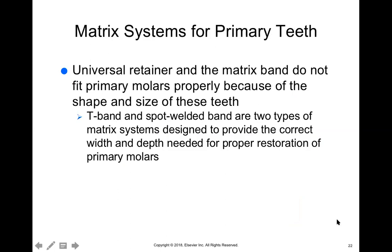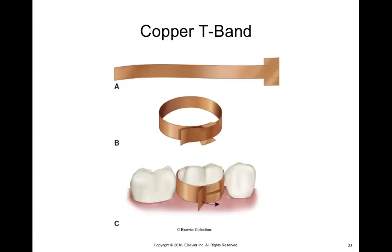For primary teeth, the matrix system is also simple. Some doctors can use the universal retainer — the Toffelmeyer — with a smaller matrix band for primary teeth. But for the most part, we use what we call T-bands and spot-welded bands for primary teeth. I'll upload some videos on how to assemble the T-band because as the assistant, you have to put it together and then the doctor places and adjusts it.